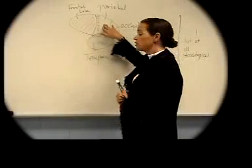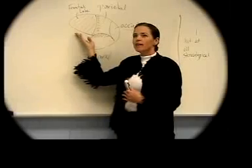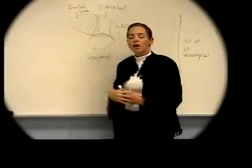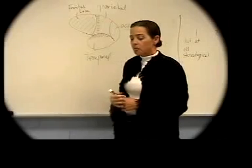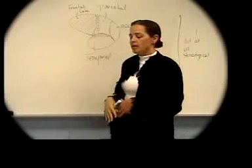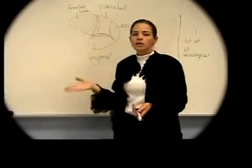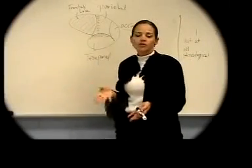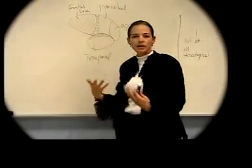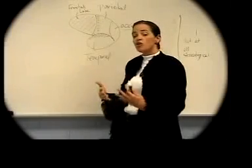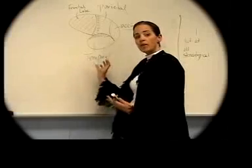The parietal lobe handles body sensations coming into its front part. The frontal lobe is kind of the best part of us because it handles higher-level mental processing — things like being able to plan a grocery list or think ahead in a game of chess. That's going to be the front part of the frontal lobe, what we actually call the prefrontal cortex. The very front part of the frontal lobe is kind of our best part of being human.